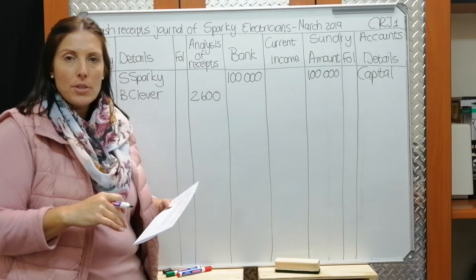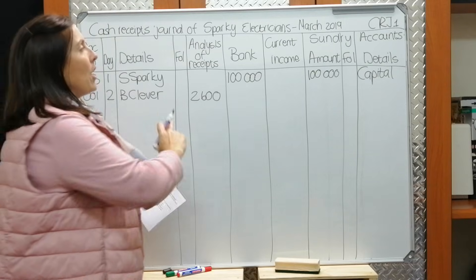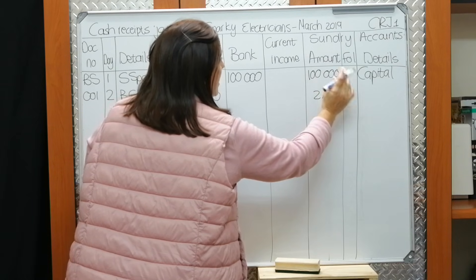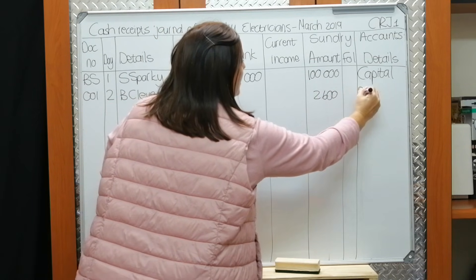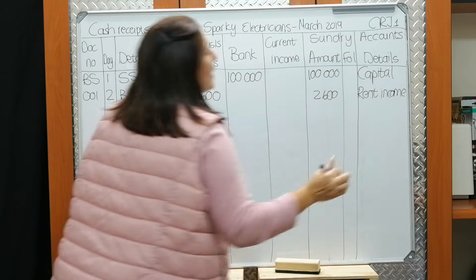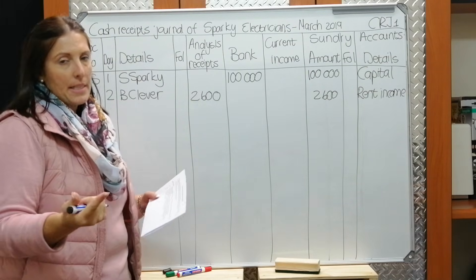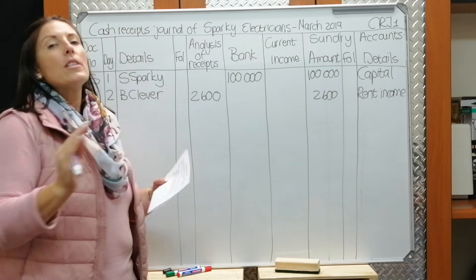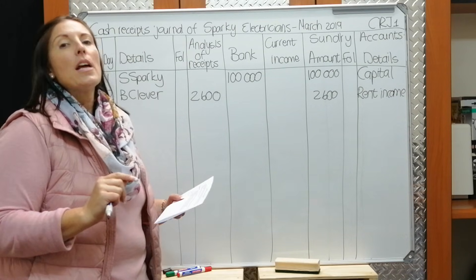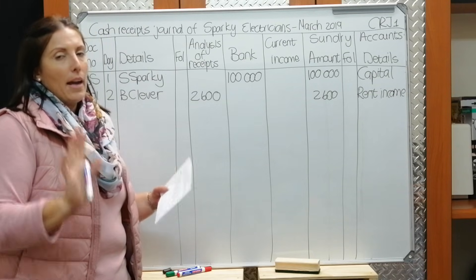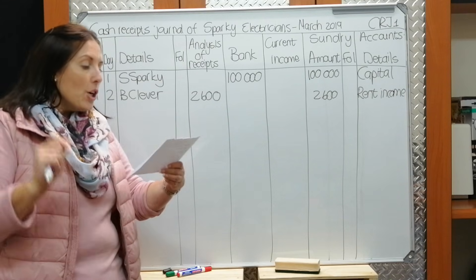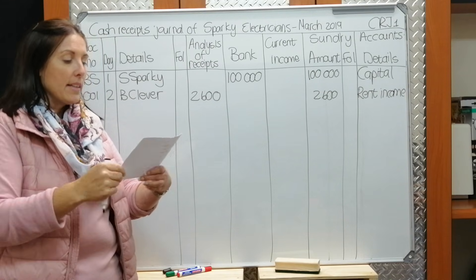Why did we receive this R2,600? Rent — the tenant paid us rent. Is there a column for rent income in our CRJ? No. So we move to sundry accounts: R2,600. Leave the folio column for now. Write the account name — and importantly, write 'Rent Income,' not just 'rent,' so you don't confuse it with rent expense, especially when posting to the ledger.